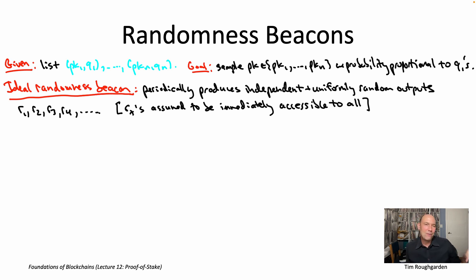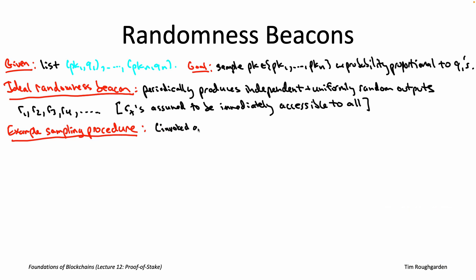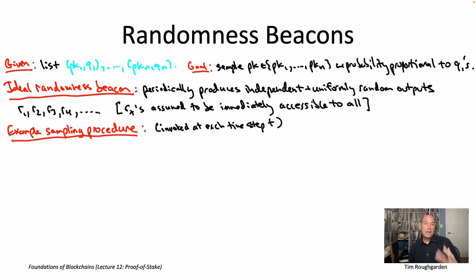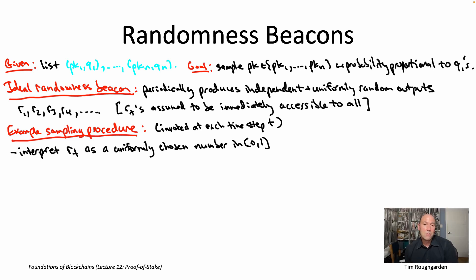Let's set aside where you'd get an ideal randomness beacon and think through: suppose we actually had access to such a beacon — how would we use it to carry out proof-of-stake random sampling? It turns out it wouldn't be that hard at all. At a given time T, the beacon emits some uniformly random output R_T — maybe a 256-bit string. The first step is just to interpret R_T as a real number between zero and one. If R_T is a 256-bit string, you interpret it as an integer and divide by 2^256, mapping outputs to the interval [0, 1].